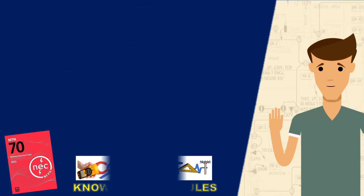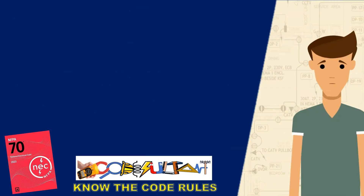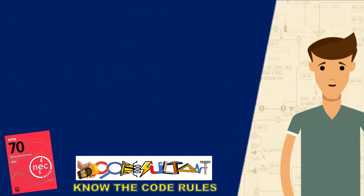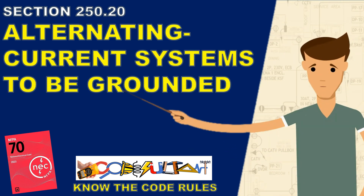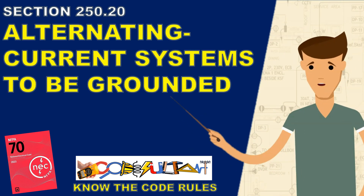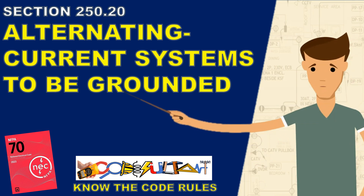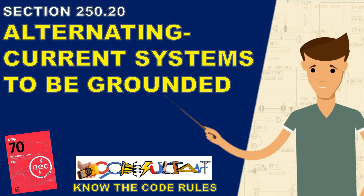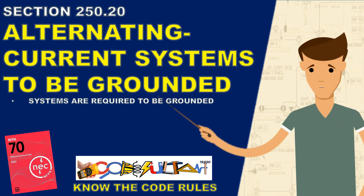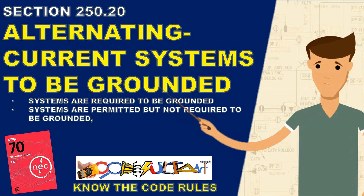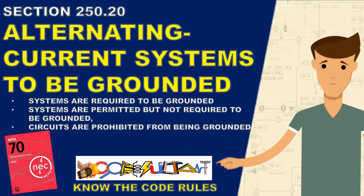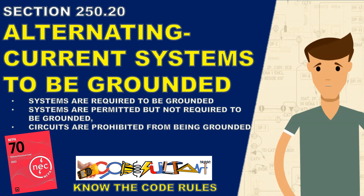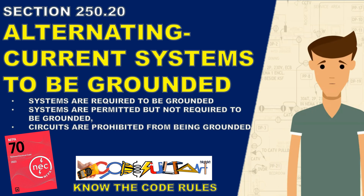Welcome, everyone, to the Codezoltan channel. Today, our discussion revolves around section 250.20 of the National Electrical Code, which pertains to grounding alternating current systems. During our presentation, we will explore which systems are required to be grounded, which systems are permitted but not required to be grounded, and also learn which circuits are prohibited from being grounded. Without further ado, let's bond together to discuss these sections.